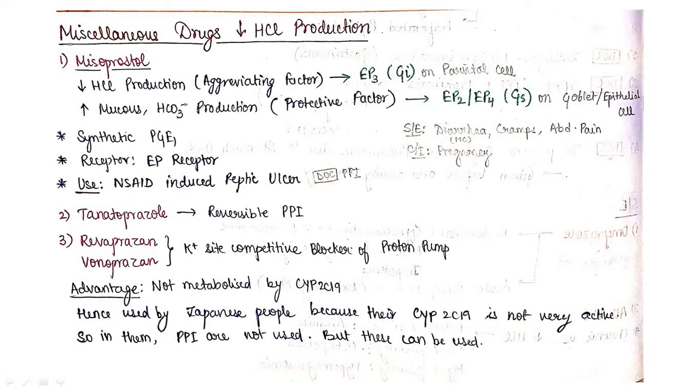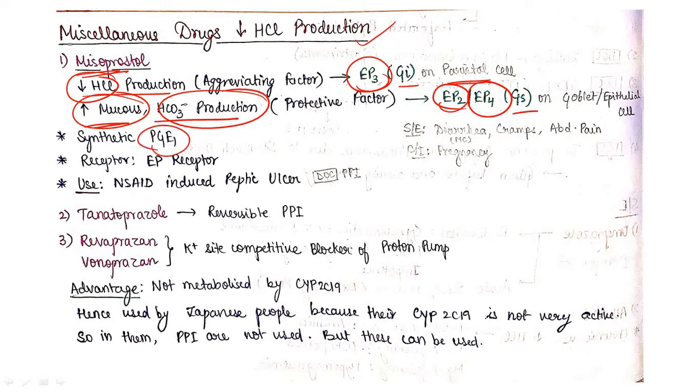Now what are the other miscellaneous drugs which can be used to decrease HCl production? The first drug is misoprostol. It decreases HCl production by inducing EP3, which is a Gi type receptor present on parietal cell. And it increases your mucus and bicarbonate. HCl is dangerous, so it will decrease HCl production. Mucus and bicarbonate are helpful and protective, so it will increase mucus and bicarbonate production. Mucus and bicarbonate production is increased by induction of EP2 and EP4 receptor, which is Gs type of receptor. This misoprostol is synthetic PGE1 analog and the receptor is EP receptor. Its use is NSAID-induced peptic ulcer.